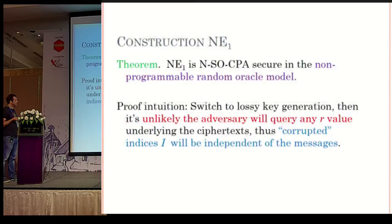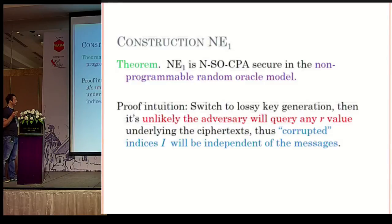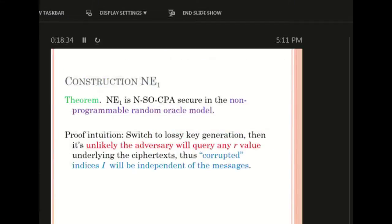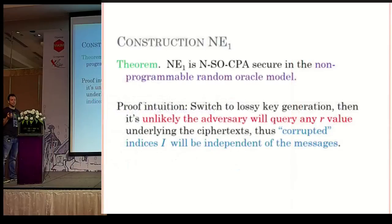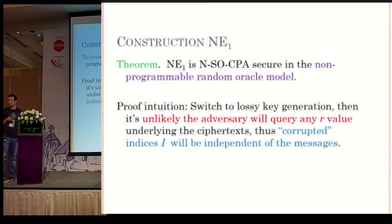The intuition for the proof: if we switch to lossy key generation, it is unlikely that the adversary will query any randomness value underlying the image of the lossy trapdoor function. This means the corrupted indices I will be independent of the messages. When the corrupted indices are independent of the messages, security can be proved easily. The hard part of proving selective opening security is that the choice of messages to corrupt can depend adaptively on the messages.